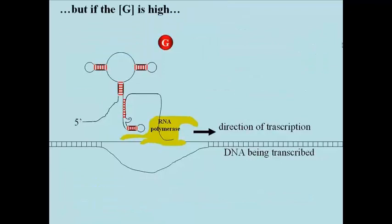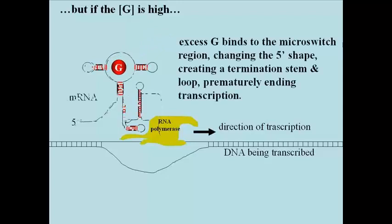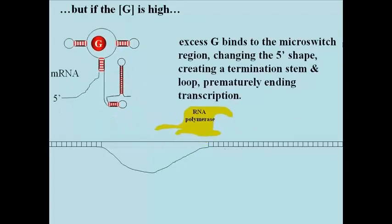But if guanine concentrations are high, the cell requires less guanine. Then the excess guanine recognizes and binds to the stem loop structure at the 5' end of the mRNA, and the riboswitch region undergoes a conformational change.